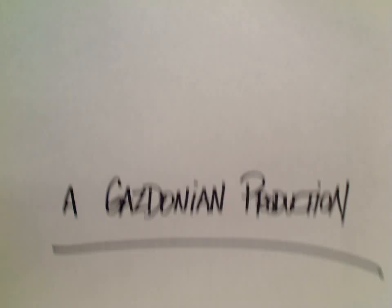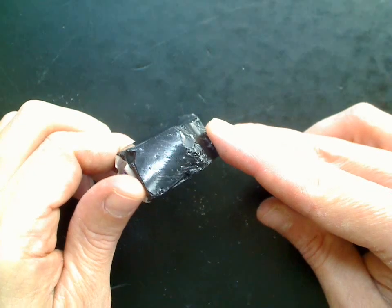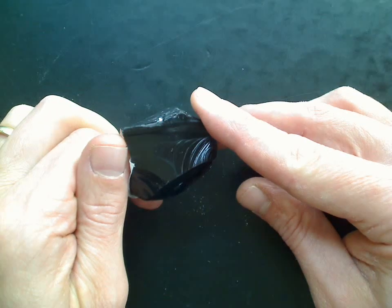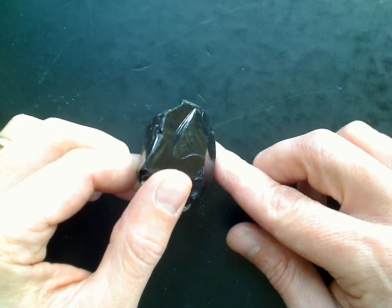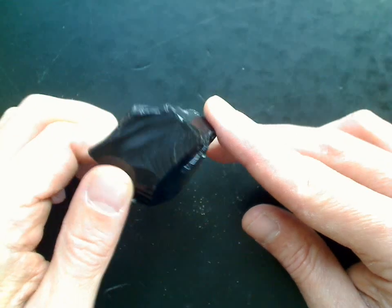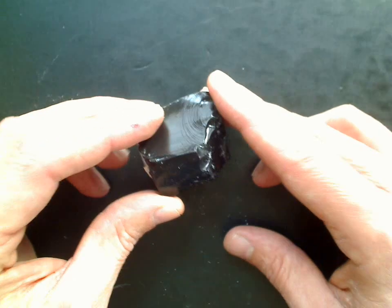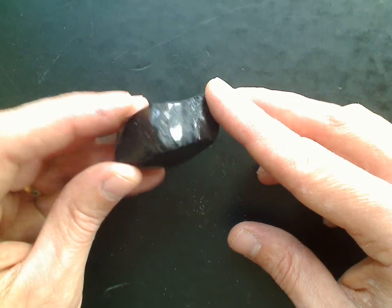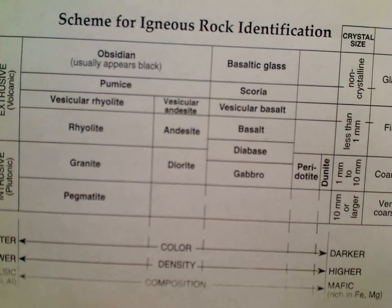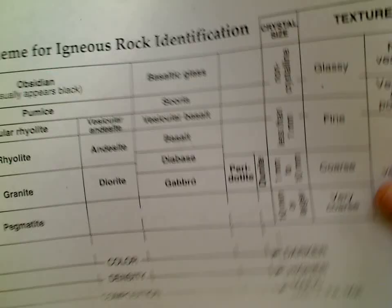One of the things that matters is the rate of cooling. This here is volcanic glass, or obsidian. You can really see how it breaks in a circular pattern — that's called conchoidal fracture. It's really shiny. This is from lava that flows on the surface of Earth and cools very quickly — so quickly that there is no time for any mineral crystals to form. On the reference table, obsidian appears black and has a glassy texture.